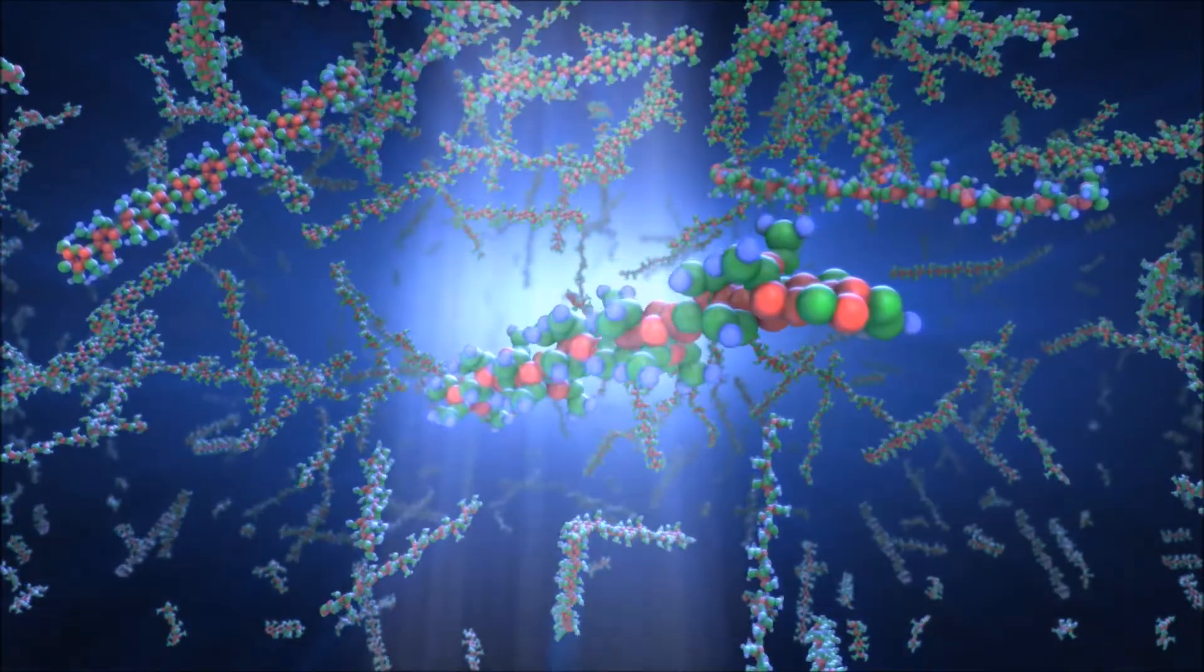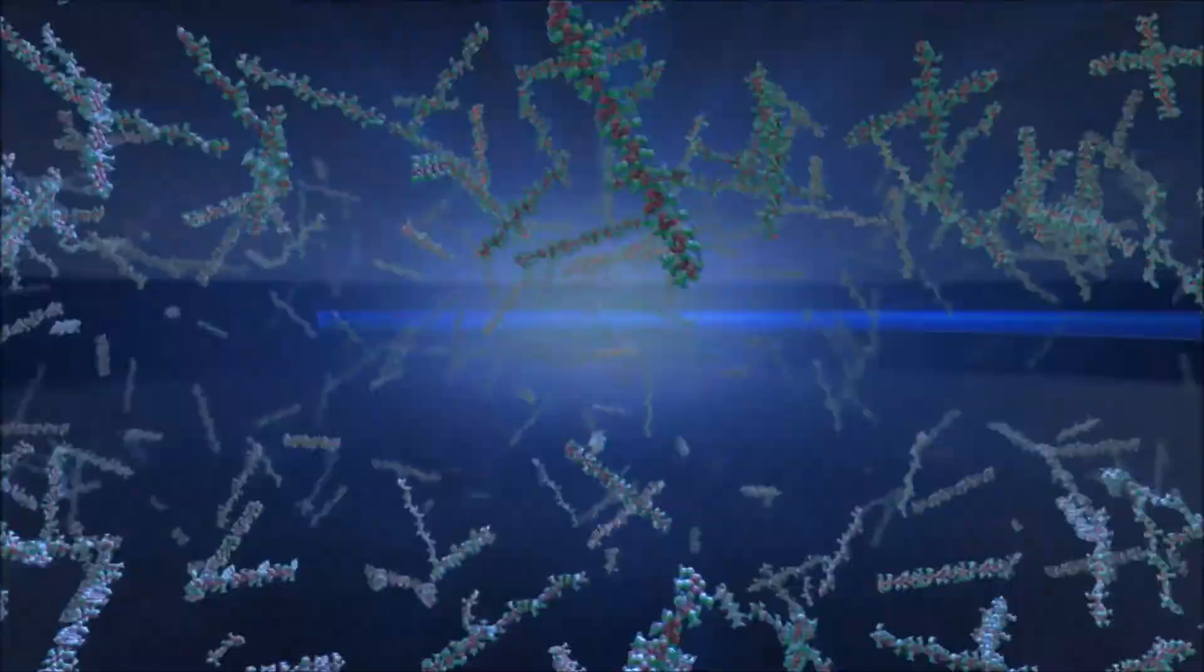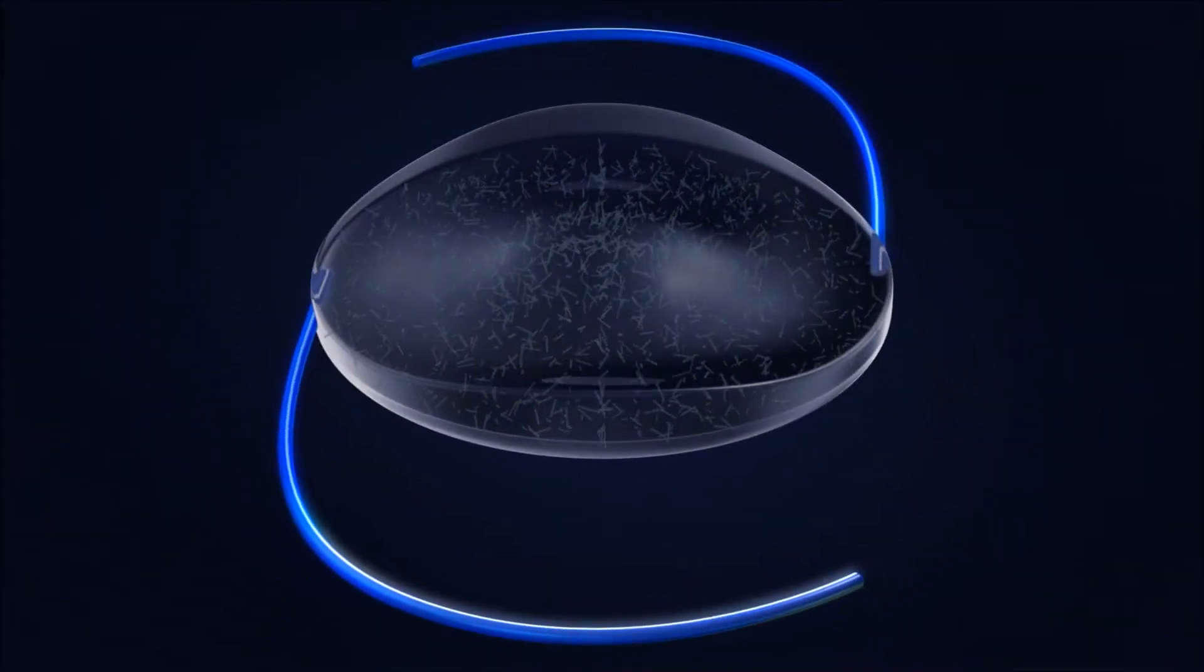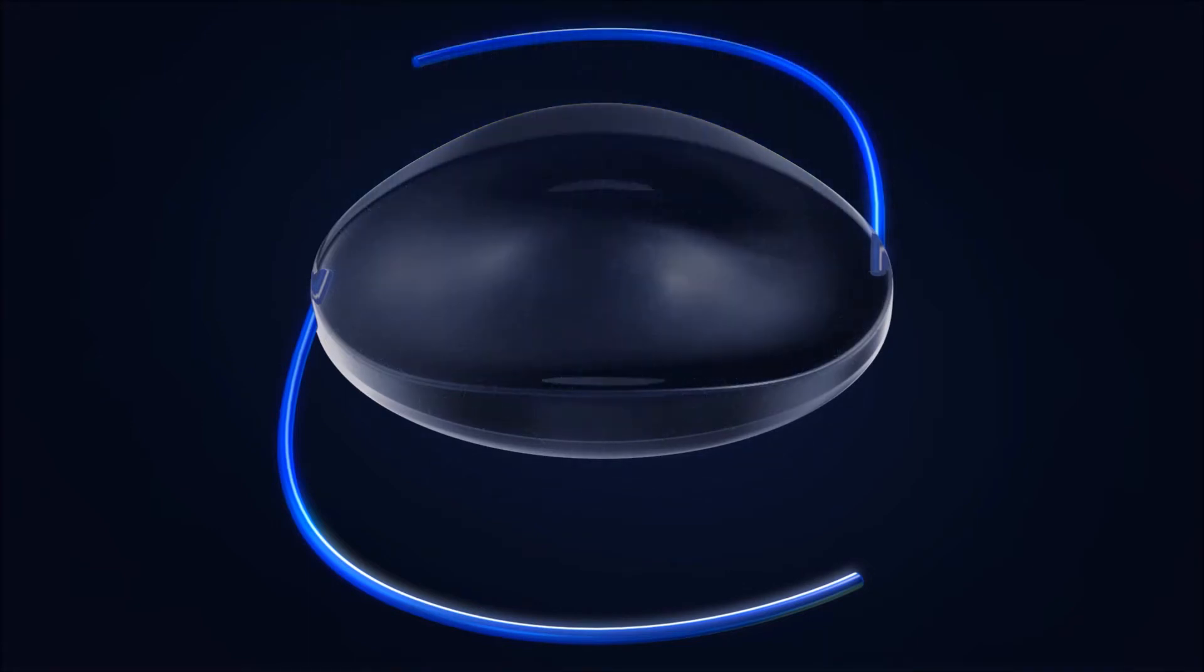When the adjustment process has been completed to the satisfaction of doctor and patient, the entire lens is exposed to the treatment light to polymerize all remaining macromers, effectively locking them in place to prevent any further changes.